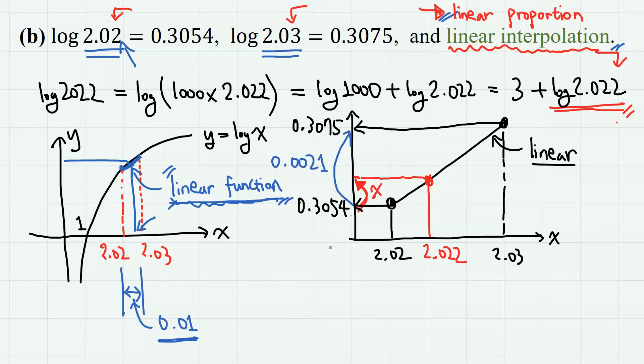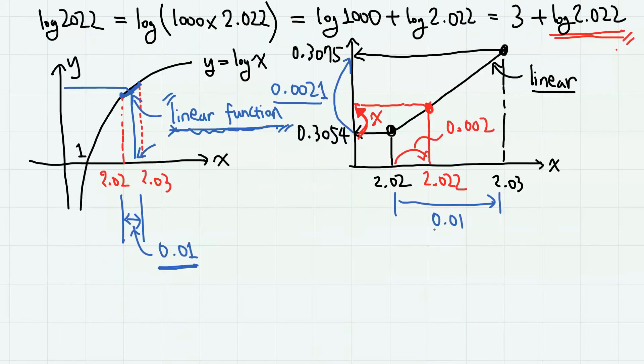Between 2.02 and 2.03, the log value increases 0.0021 and the x value increases 0.01. Here the x value increases 0.002, so we have a proportionality relation.